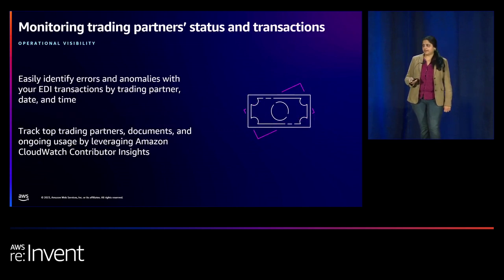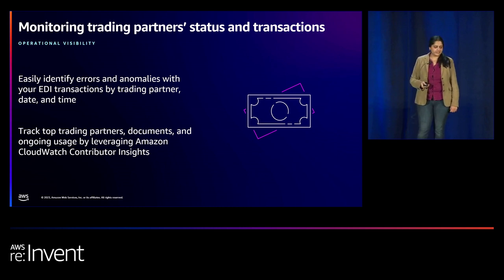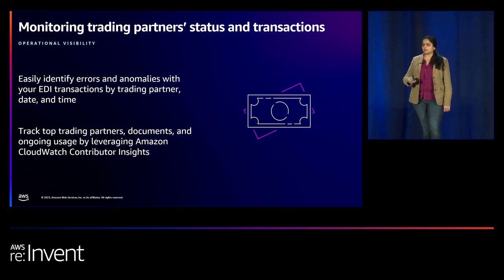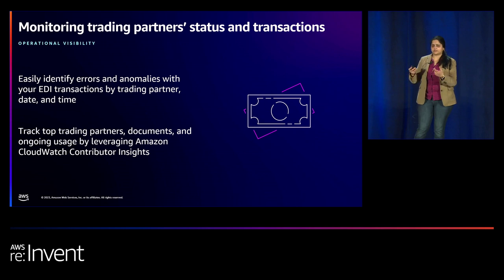Automation is the third feature. You can set it up so that as soon as a file lands in your S3 bucket, an EventBridge rule kicks off targeting the service, the translator automatically picks it up, translates it based on the rules you've set up, and outputs it to another S3 bucket. It's a set-it-and-forget-it approach. For monitoring, errors get thrown into your CloudWatch logs, and with CloudWatch innovations you can search, filter, and track which are your top trading partners, what are the top documents you send or receive, and get insights right from the logs.